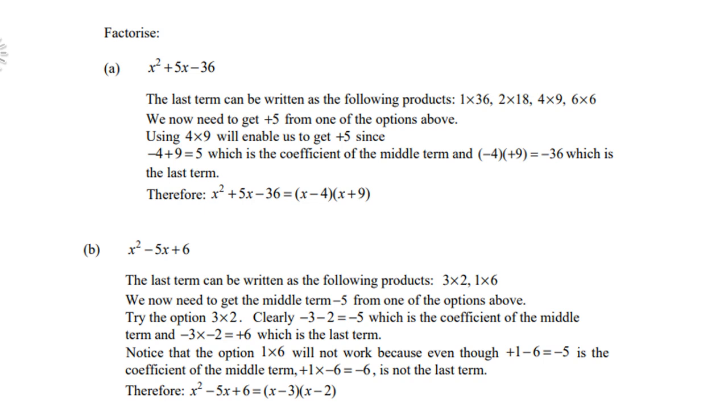Now clearly, a negative 3 plus a negative 2 is a negative 5, which is the coefficient of the middle term. And a negative 3 times a negative 2 is a positive 6, which is the last term.